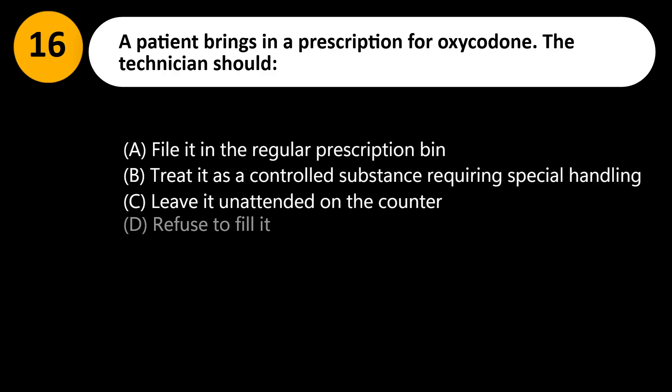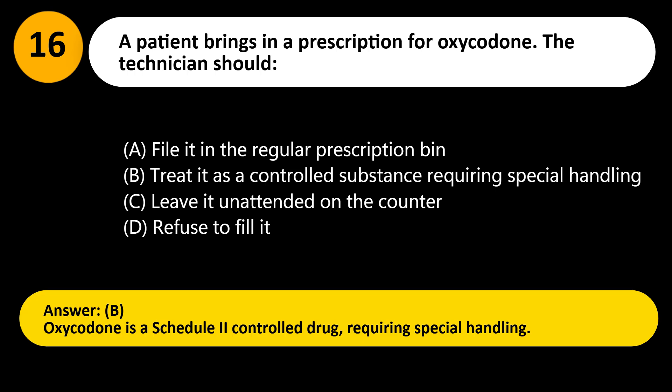A patient brings in a prescription for oxycodone. The technician should: A. File it in the regular prescription bin. B. Treat it as a controlled substance requiring special handling. C. Leave it unattended on the counter. D. Refuse to fill it. Answer: B. Oxycodone is a Schedule II controlled drug, requiring special handling.